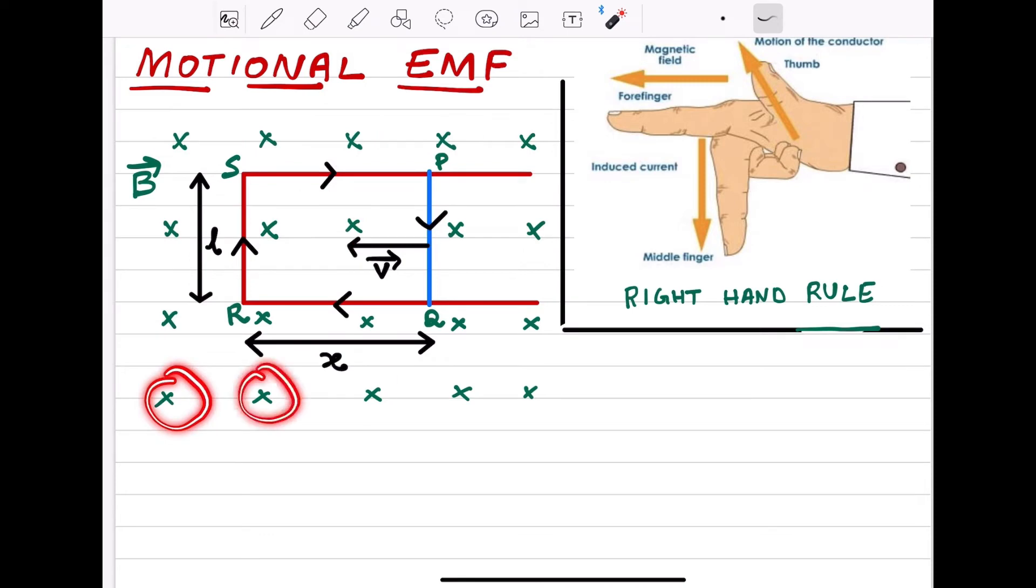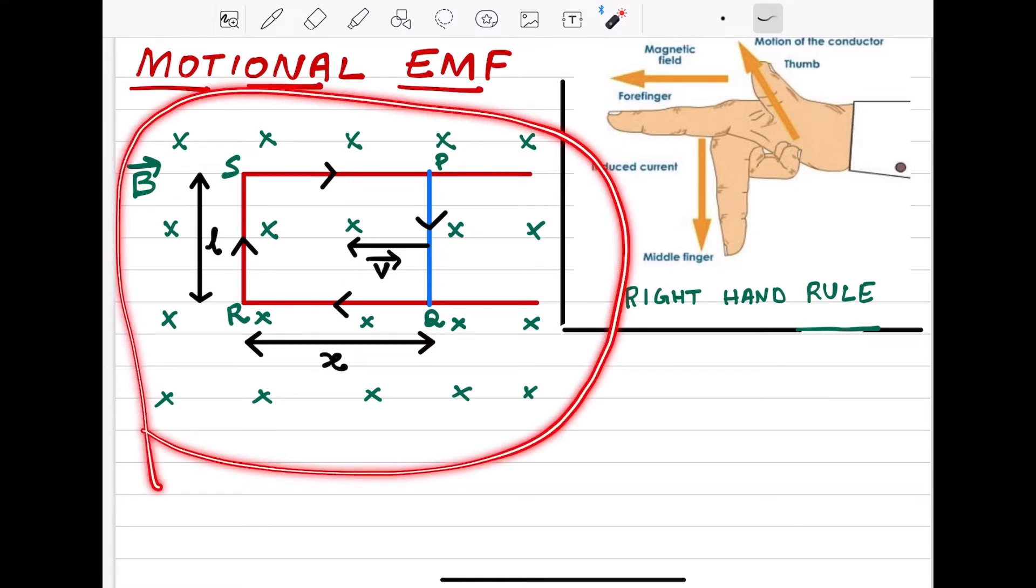Now if you use Fleming's right hand rule, you can calculate the direction of current. So what is Fleming's right hand rule? If the forefinger points the direction of magnetic field and if the thumb gives the direction of motion of conductor, then the central finger will give you the direction of current. The magnetic field is into the plane of the paper. Thumb will give the direction of motion of conductor, central finger will give the direction of current. So this is about the understanding of the diagram.